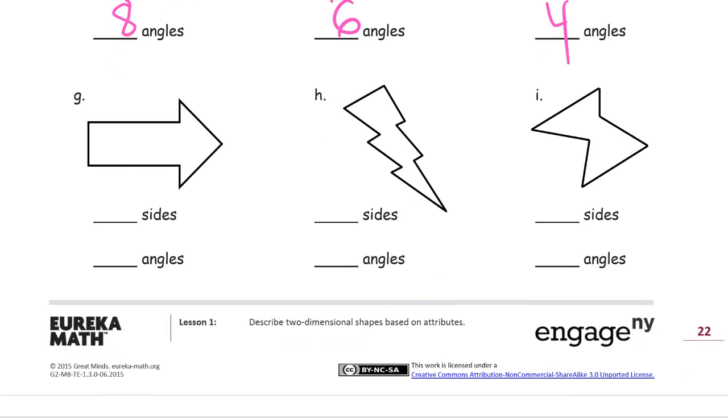Well, here we have an arrow shape. One, two, three. Those short ones count too. Four, five, six, seven sides. And one, two. There's an innie. Three, four, five, six, seven angles.